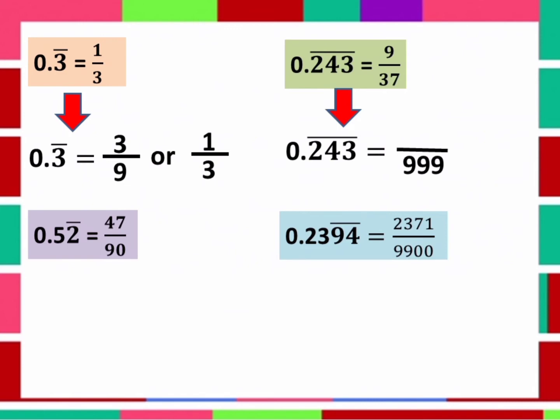Now, what will be the numerator? Yes, 243. So it will become 243 over 999. And if we reduce it to lowest term, it will become 9 over 37.